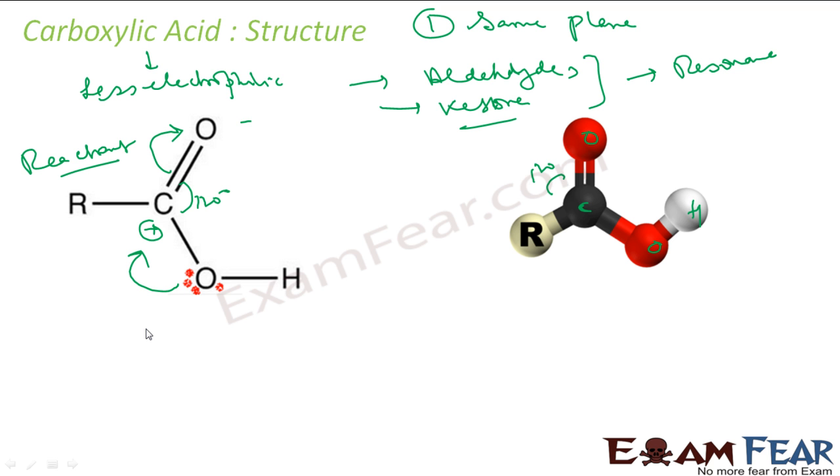So what will happen? Oxygen will get the positive charge, correct. So let's see, the first structure we get is this: R-C-O minus with H. This is one structure.